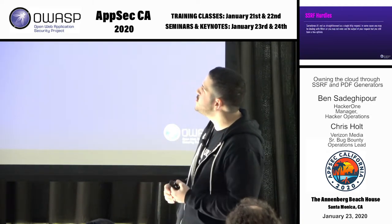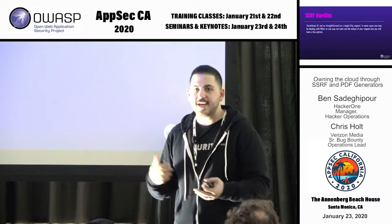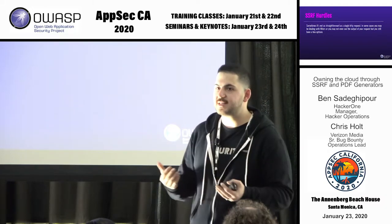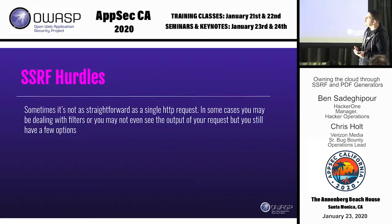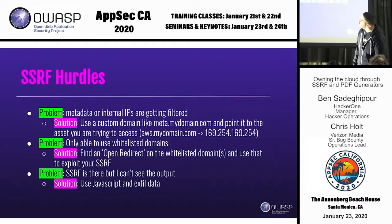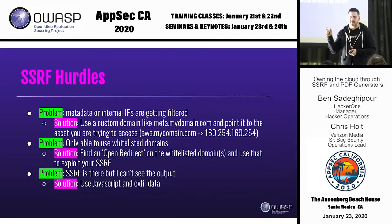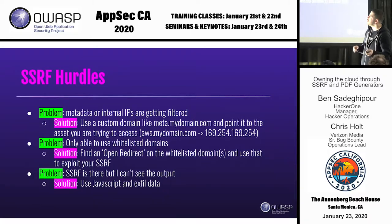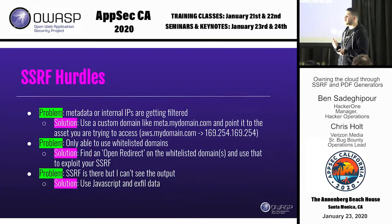It's not always straightforward. Sometimes you have to figure out how to exfiltrate data, whether using JavaScript or finding a bypass. People are learning about SSRF — it's becoming more popular and more companies are learning how to deal with it. For example, if the metadata or internal IP is filtered — they're literally matching that IP string — you can make your own custom domain, point it to that IP address, query your domain, and it works. That's one bypass we've seen.